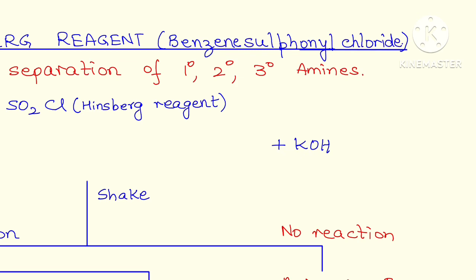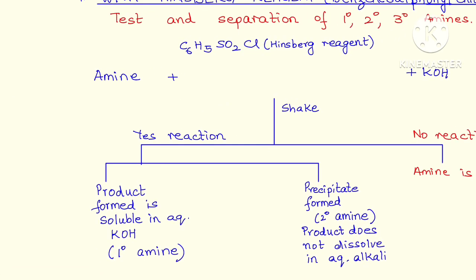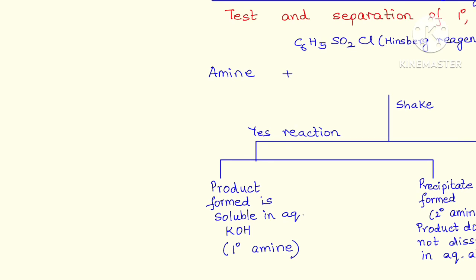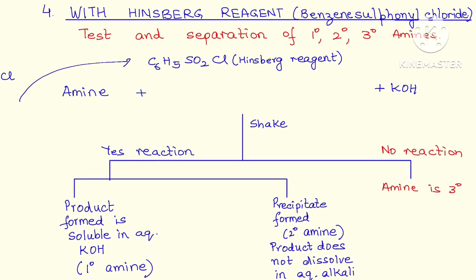The formula is written as C6H5SO2Cl. We can also depict benzene sulfonyl chloride as the ring SO2Cl. We can either write it this way or C6H5SO2Cl is our Hinsberg reagent.